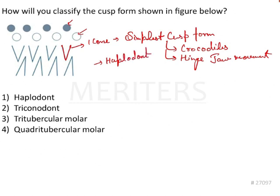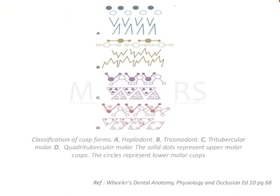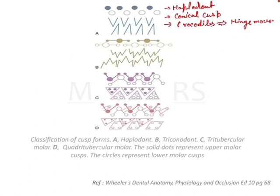Now I will be explaining the other important cusp forms as well. Let's start with the haplodont as we have already discussed. This is the most simple form, the simplest form and the conical cusps are seen. It is seen in crocodiles or reptiles and in that only the single hinge movement is possible. Hinge movement of opening and closing possible.